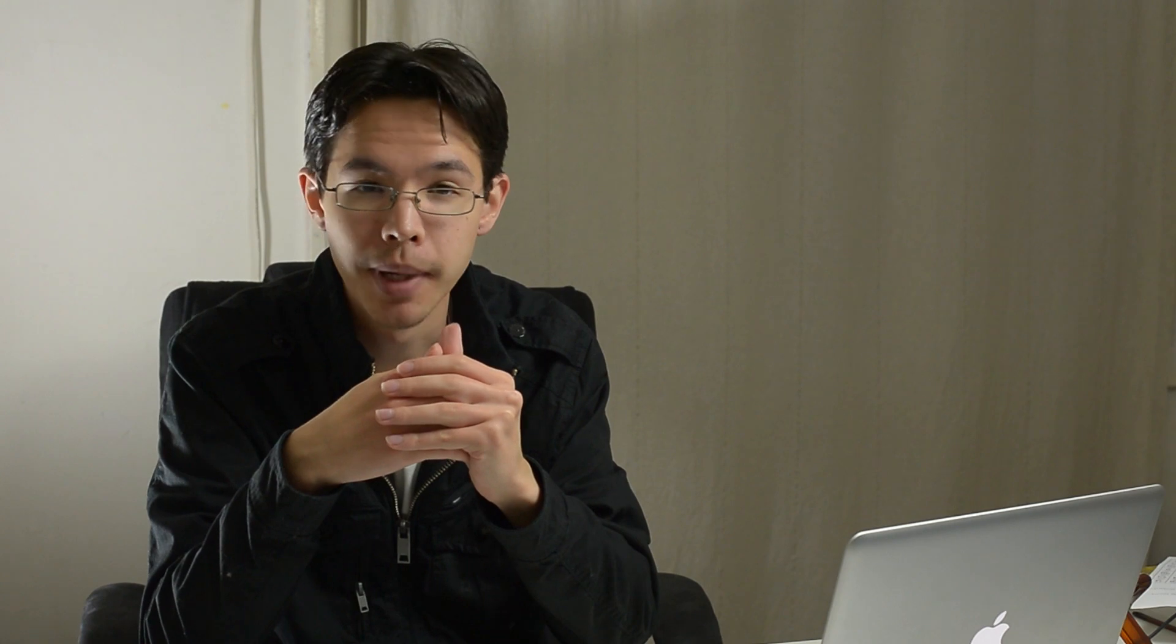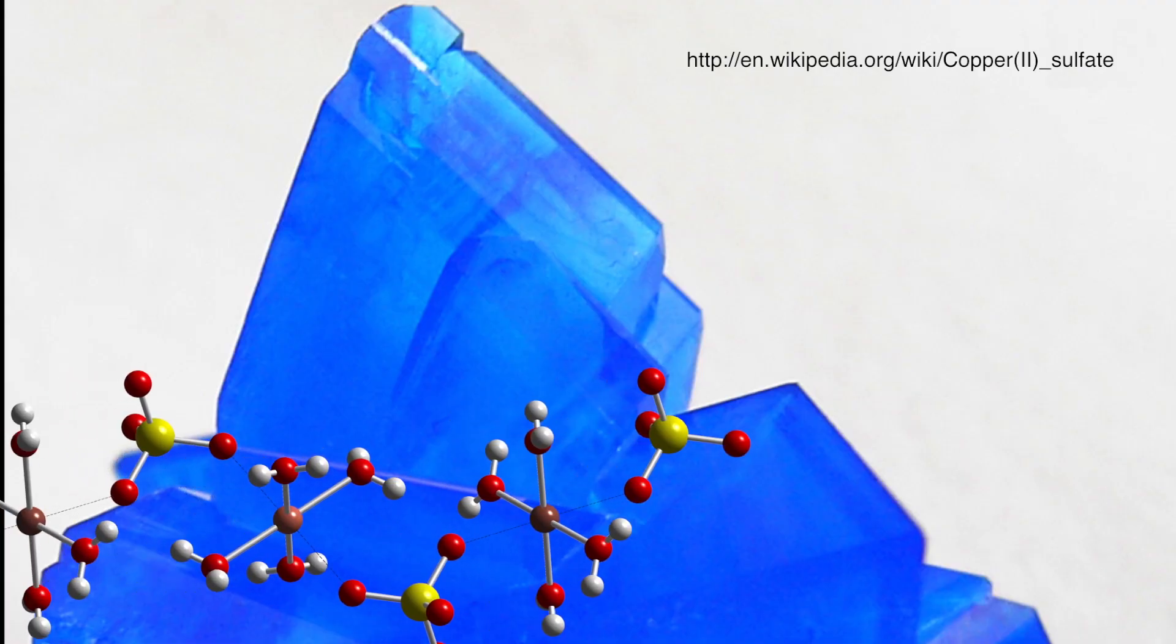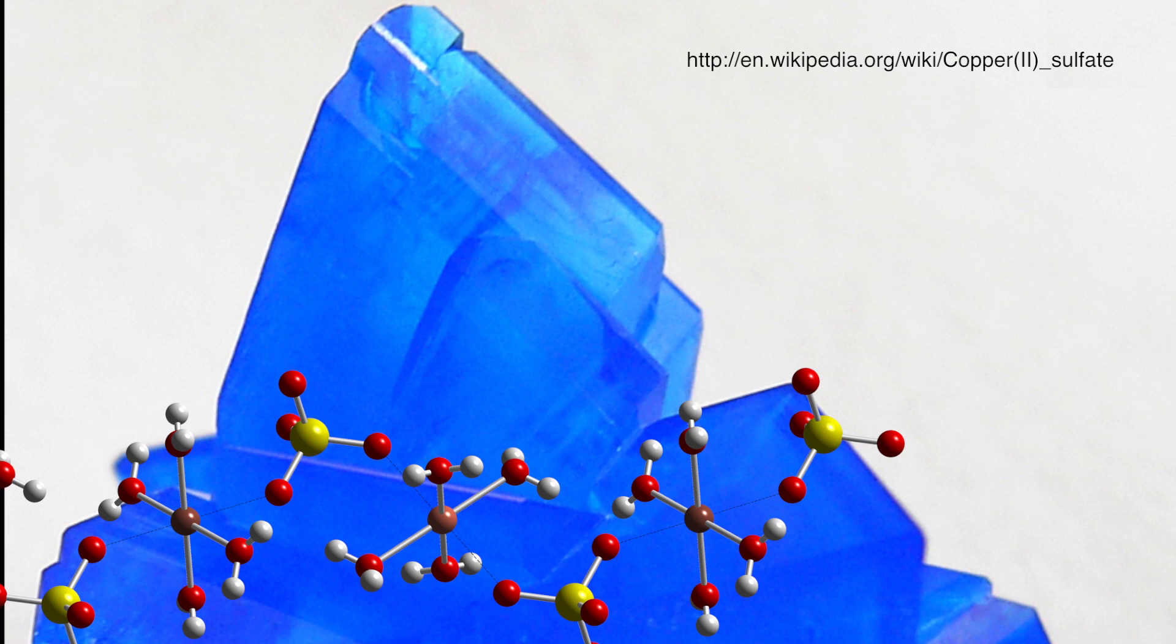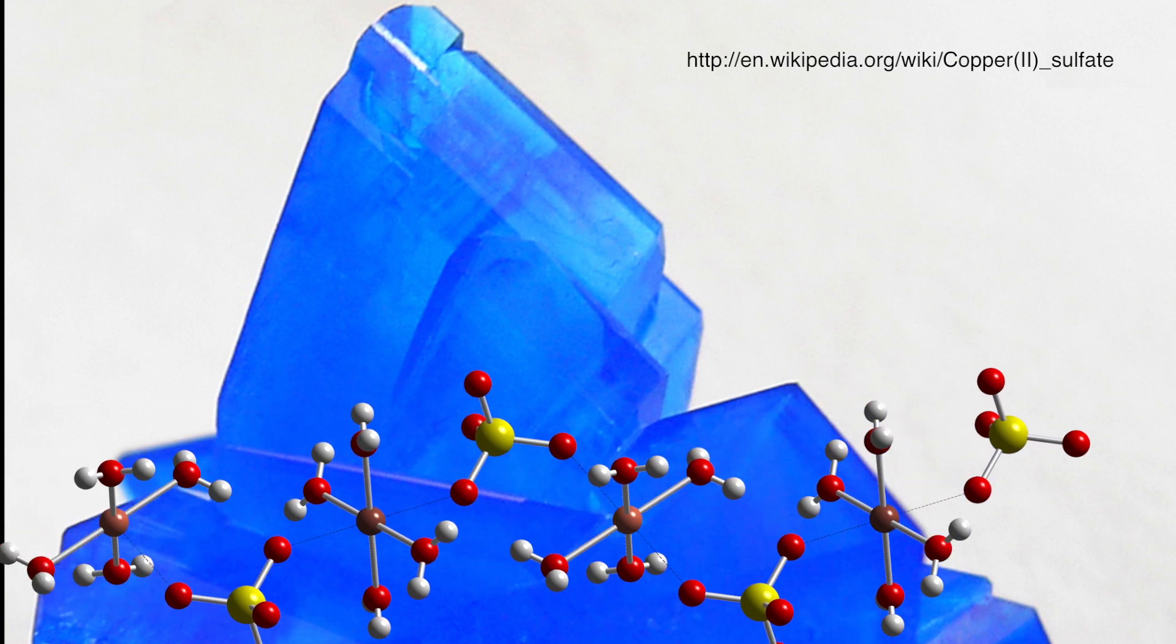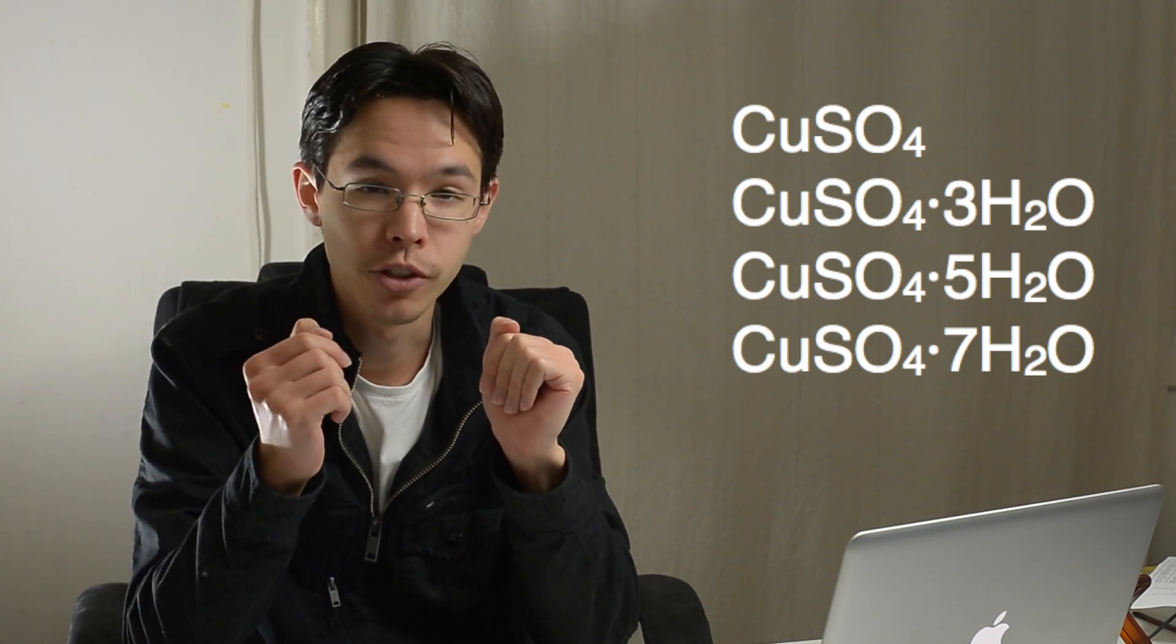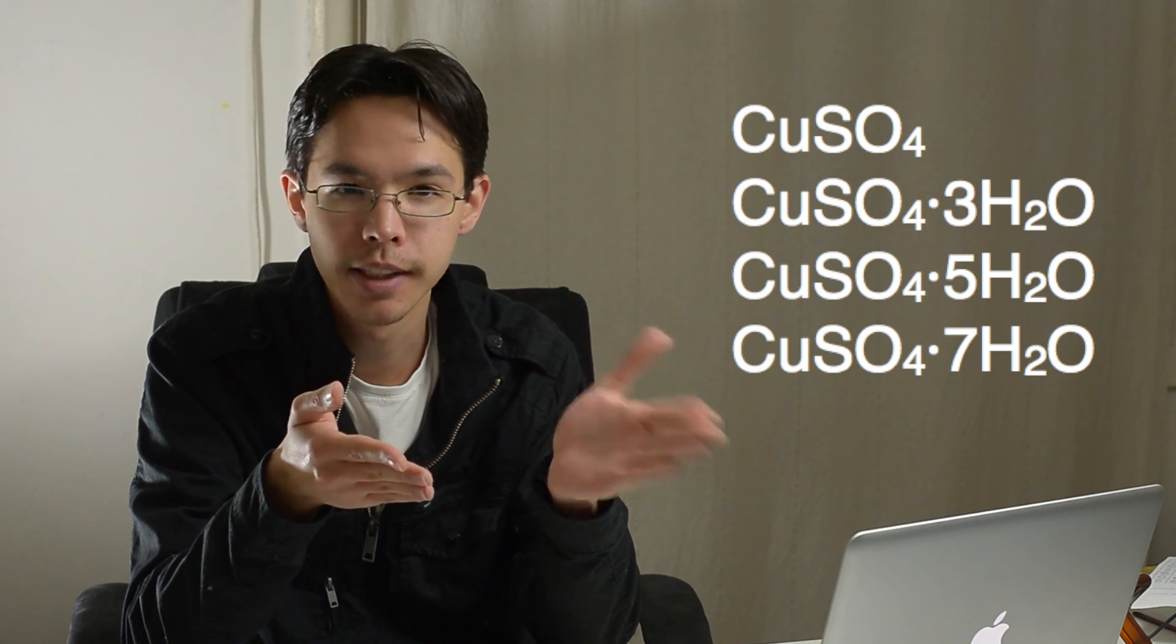This procedure might work well for most things, however you may come across hydrated ionic compounds, where the water molecules have been incorporated into the crystal structure of the ionic compound. We write these chemical formulas with the water molecule just tacked onto the end. Such in these examples here where anhydrous copper sulfate doesn't have any water in it, so it has none. We got copper sulfate trihydrate, which has three water molecules for every one molecule of copper sulfate. And we have copper sulfate pentahydrate and copper sulfate heptahydrate.